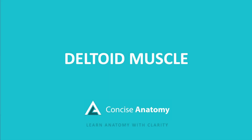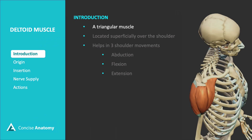Today we're focusing on the deltoid muscle. The deltoid is a triangular-shaped muscle that sits superficially over the shoulder joint, forming that distinctive, rounded shoulder appearance.